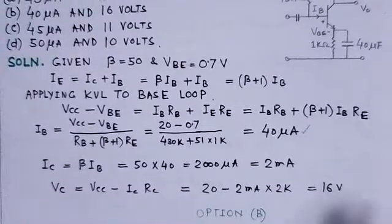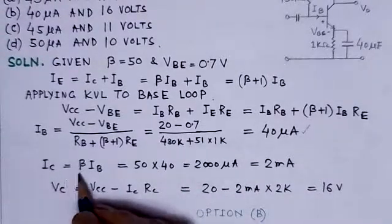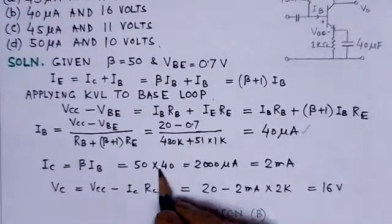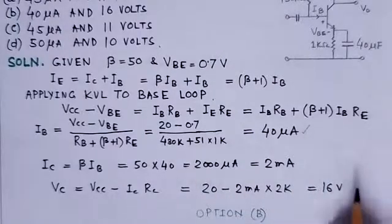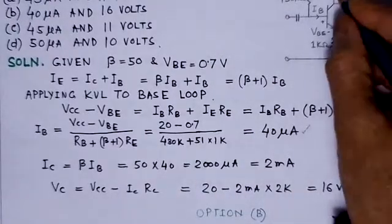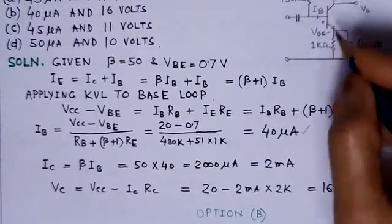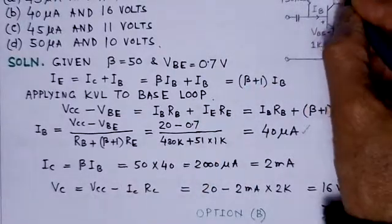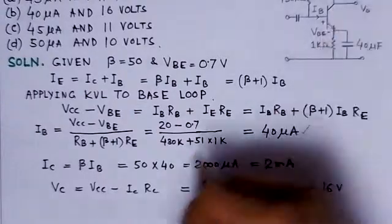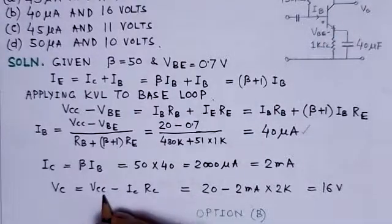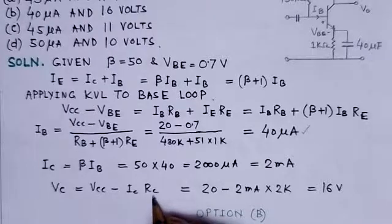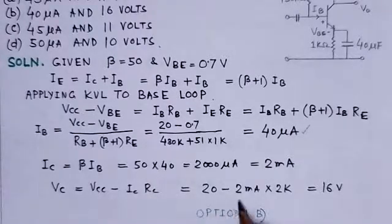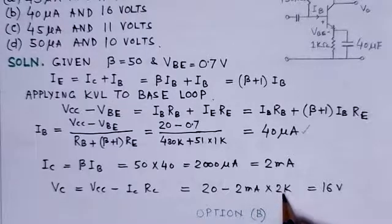Knowing the base current, we can find the collector current, which is beta IB: 50 times 40, that is 2 milliamperes. Once we know the collector current, we can find VC. VC would be VCC minus IC RC. With IC as 2 milliamperes and RC known, VC comes to be 16 volts.